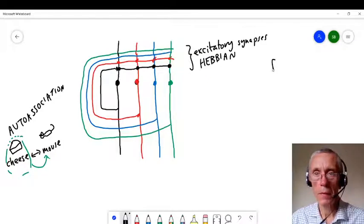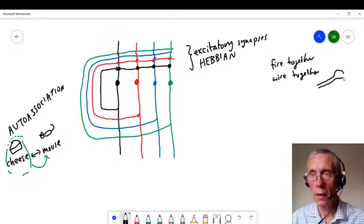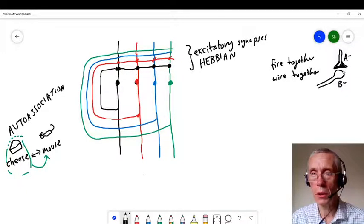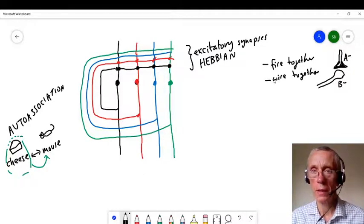Neurons that fire together wire together. Right, so with a Hebbian synapse, if I've got a neuron here and I've got a synaptic input coming down here, if A is firing a lot and B is firing a lot, this synapse gets strengthened. Right, so the more these two fire together, the stronger this synapse gets. And you get more neurotransmitter released, you get more receptors, it doesn't matter how. So neurons that fire together wire together, that's called the Hebbian rule.